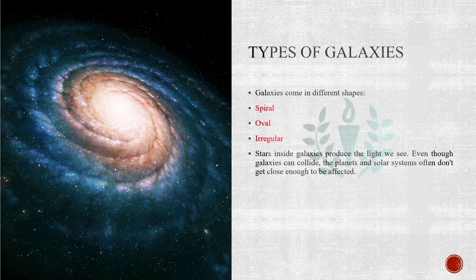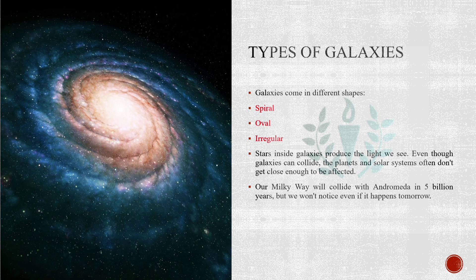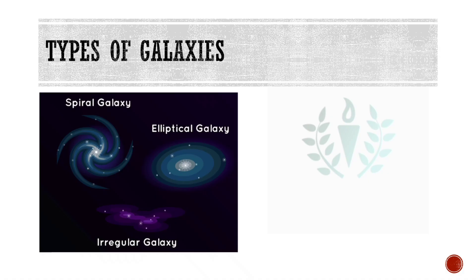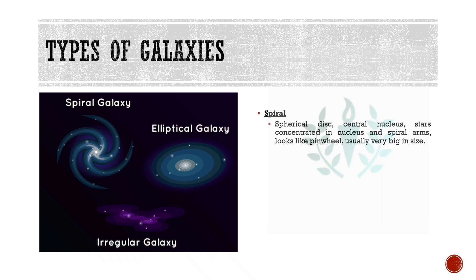Inside these galaxies produce the light we see. Even though galaxies can collide, the planets and solar systems often don't get close enough to be affected. There is a sort of rearrangement where, over Earth, let's suppose when the Milky Way collides with Andromeda after five million years, the Earth might find some new neighbors surrounding it, but there are least or no chances of it being physically impacted, so we won't notice even if it happens tomorrow.